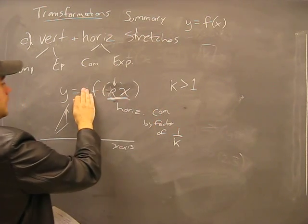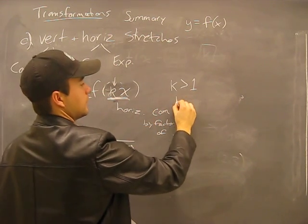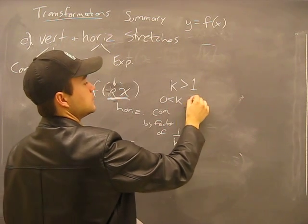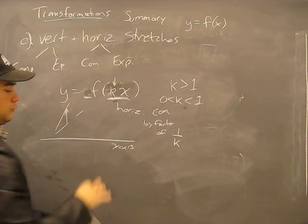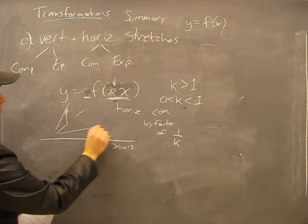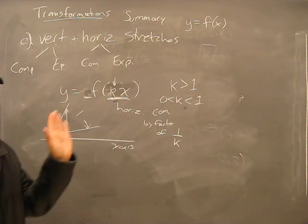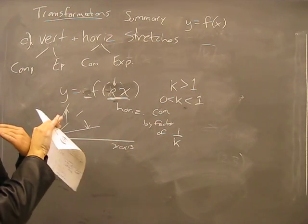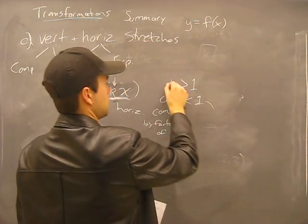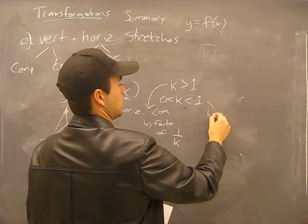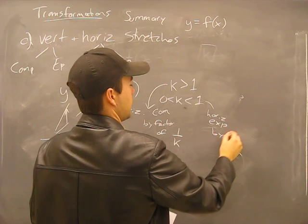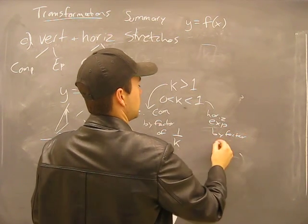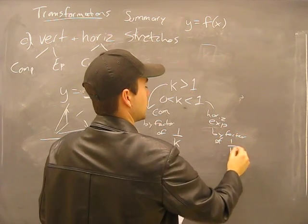If k is between zero and one, then slope is decreasing, so we're expanding the horizon, the mountain tops are collapsing. Then we have a horizontal expansion by a factor of one over k.